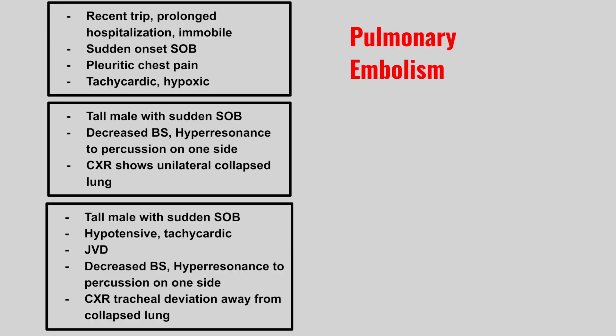Next, we have a tall male with sudden shortness of breath, decreased breath sounds, hyperresonance to percussion on one side of the lung field. Chest x-ray shows unilateral collapsed lung. This is a pneumothorax.